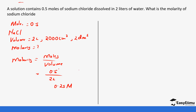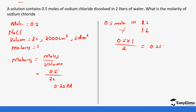Using the first principle: 0.5 moles are in 2 litres — what about in 1 litre? Cross-multiplying gives 0.5 times 1 divided by 2, which is 0.25 moles per litre, or 0.25 M.